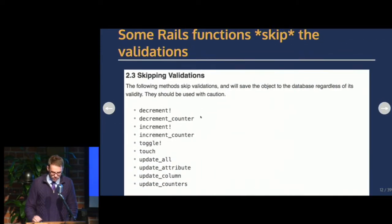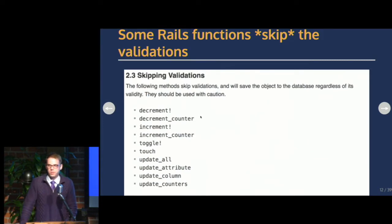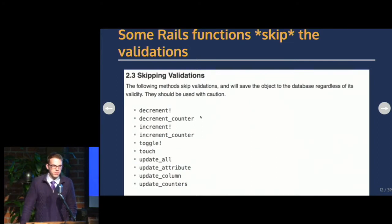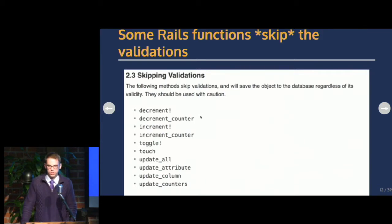Another thing not in the paper: some Rails functions will skip the validation entirely. If you define validations in your model, these 12 methods listed here will all skip those validations and just dump the data straight into the database. Also, if you have any kind of script writing SQL or running in a different language without using those Rails validations, you can skip it and write bad data straight to the database — which is a consistency problem in your application.